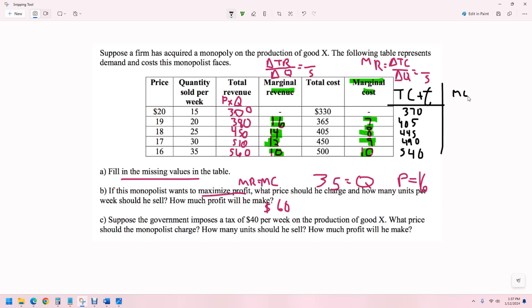Now we need marginal cost with tax. So we're going to do the same thing. This is 35, and then we're going to divide by five. That doesn't change. This is basically like a fixed cost. So how many units do we sell? We still sell 35. What price are we going to charge? We're still going to charge 16. And how much profit will we make? We're only going to make 20.